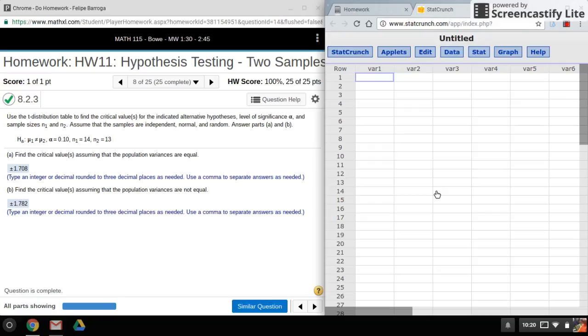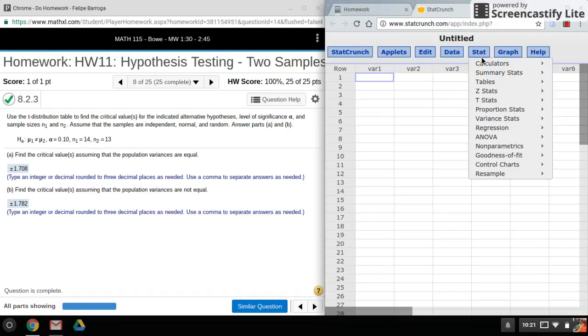Hi again everyone, welcome back. For this video, I'll be showing you how to find critical values for two-sample hypothesis testing for t. There's a couple of things you need to know before you find your critical values for t-tests. Let me open up my t calculator under stat calculators.